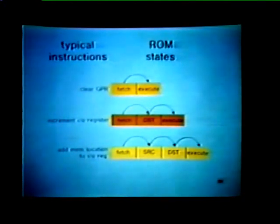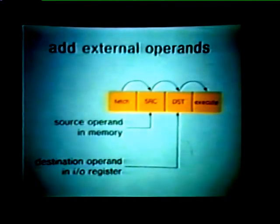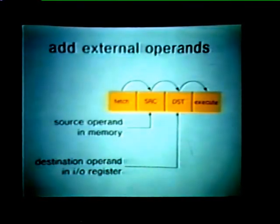To summarize, any instruction involves two, three, or four ROM states. The number of states depends on where the operands are located and what the instruction is. For instance, an add instruction where the source operand is in memory and the destination is in an IO register requires all four ROM states. If both numbers being added were stored internally in GPRs, we would not need the source and destination states, and the add instruction would use just two ROM states.